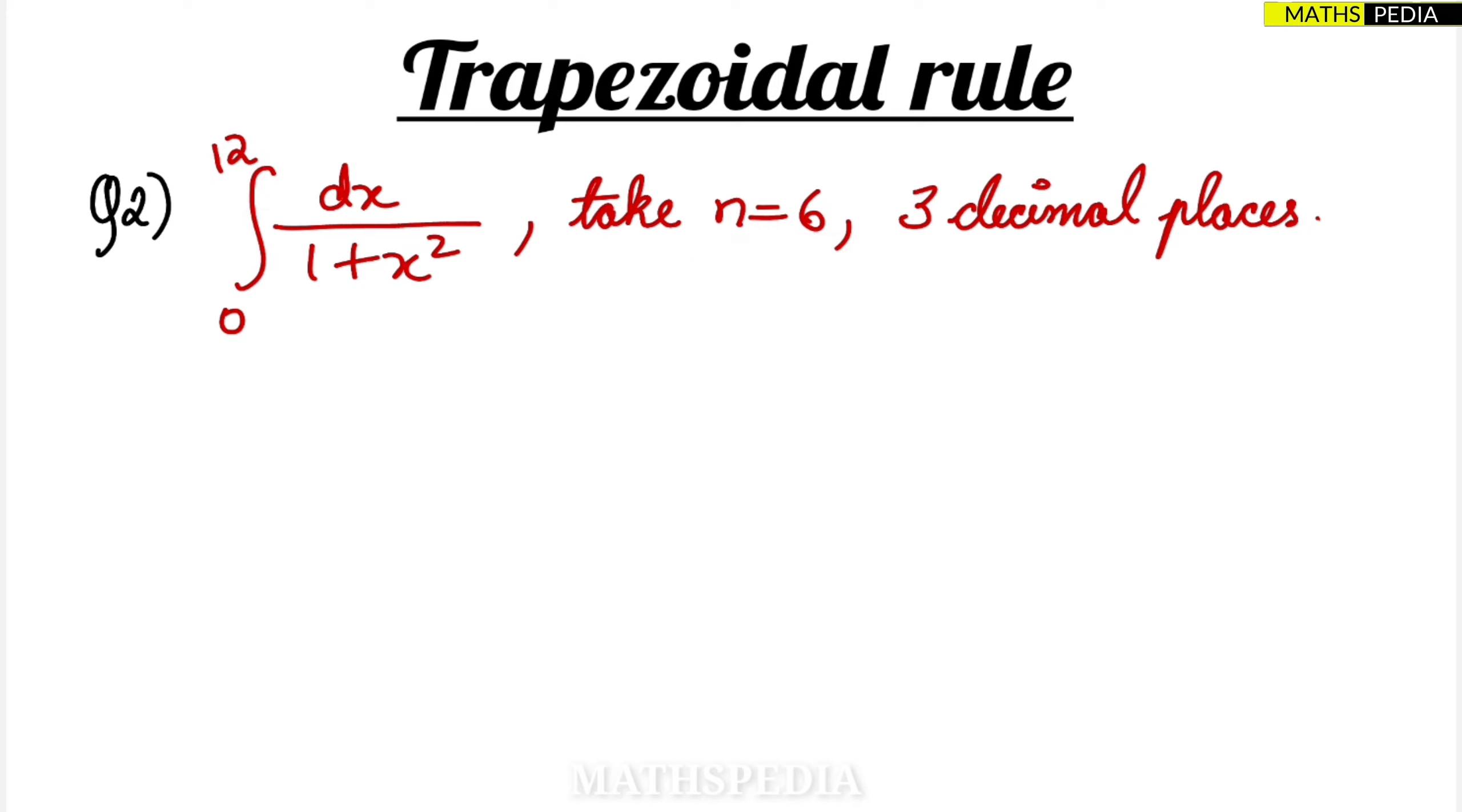What is the meaning of n? n is nothing but the interval. 3 decimal places - always remember that whenever you are taking the values, it should be in 3 decimal places at least, or 4 also you can define. If they have mentioned 3, then take it as 3 only. So after the decimal point, how many numbers you will take. That's it.